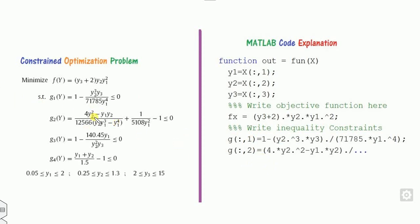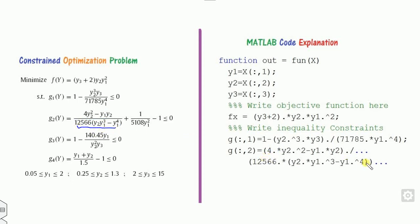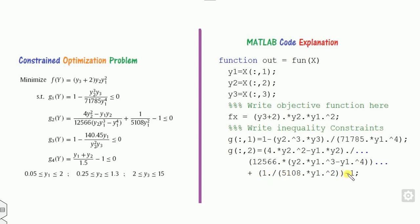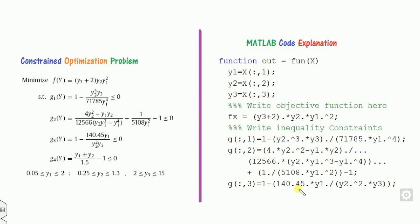Similarly, write the second constraint — since it is a long expression, use three dots (continuation) to split it across lines; otherwise write it on a single line. Then write the third and fourth constraints in the same way. Make sure all constraints are in less-than form. If any constraint is greater than, multiply it by negative one to convert it to less than.